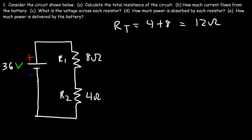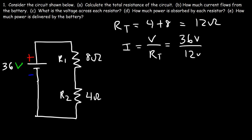Now part B: how much current flows from the battery? In a series circuit there's only one current; in a parallel circuit there are multiple currents. The current that flows from the battery is going to be the voltage of the battery divided by the total resistance of the circuit. So it's 36 volts divided by 12 ohms, which equals a current of 3 amps.